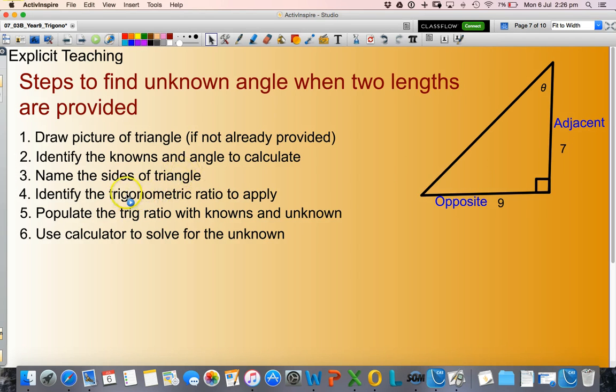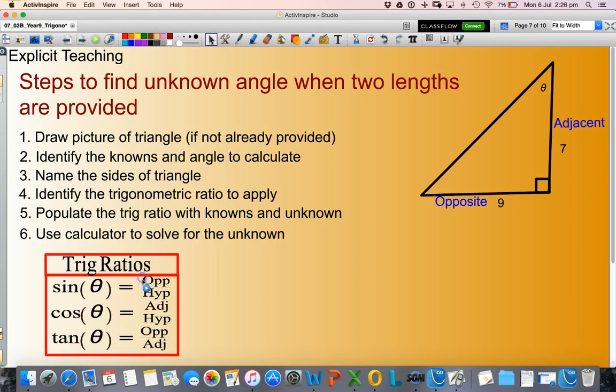So I need to identify the trig ratio that has the opposite and the adjacent in it. Which one has opposite and adjacent? That is tan theta. So I'll write that down. Tan theta equals opposite divided by adjacent.